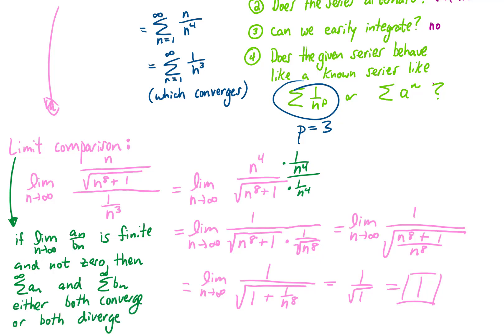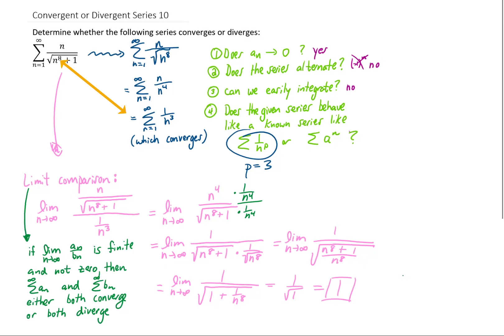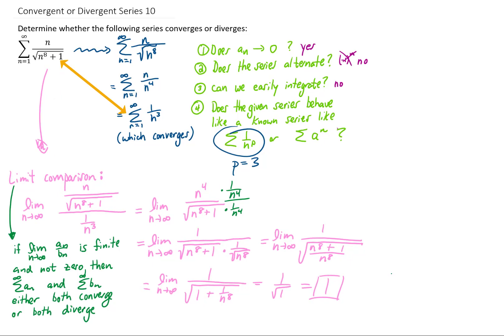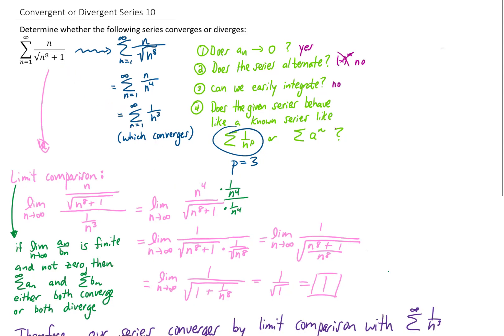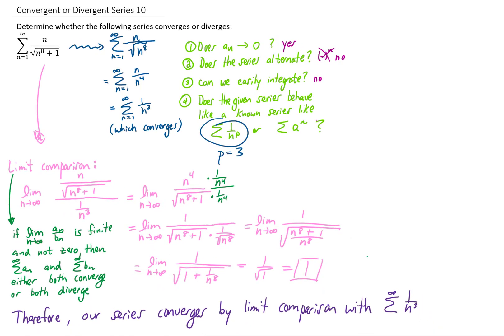So now by doing all of this work in pink, we know that our original series and the series that we are comparing to, this 1 over n cubed series, either both converge or both diverge. Well we know that this 1 over n cubed series converges. Therefore we know that the series given to us in this problem converges by using the limit comparison test with the series 1 over n cubed.